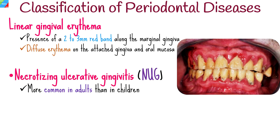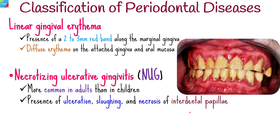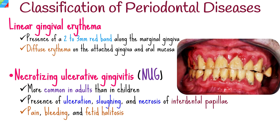The second type is necrotizing ulcerative gingivitis, which is more common in adults than in children. It is characterized by the presence of ulceration, sloughing, and necrosis of one or more interdental papillae, accompanied by pain, bleeding, and fetid halitosis.